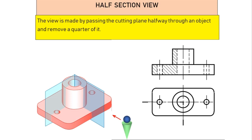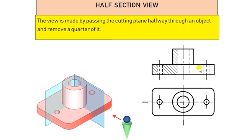In the half section view, the view is made by passing the cutting plane halfway through an object and removing a quarter of the object — only 25% is removed. As we are looking from this side, only the left hand side cut portion will be seen in the front view, not the right side.